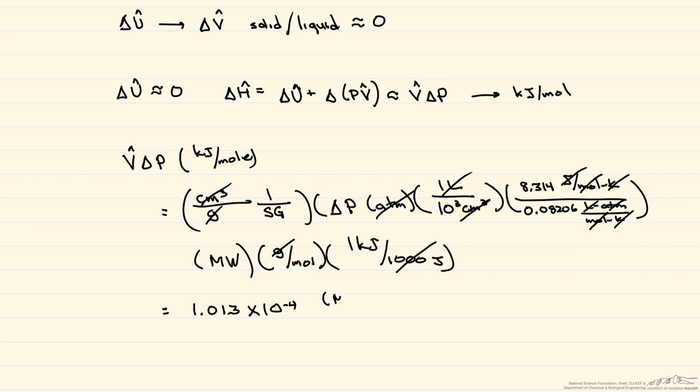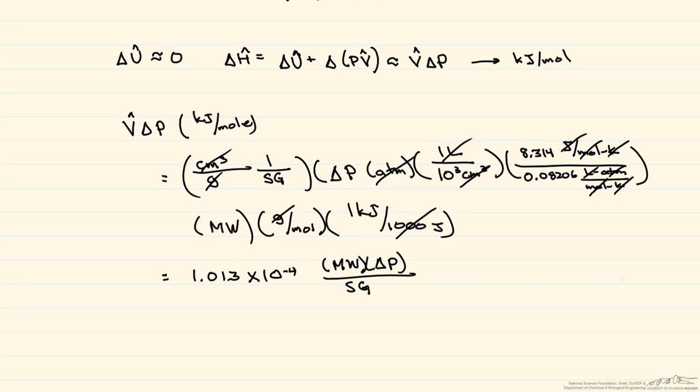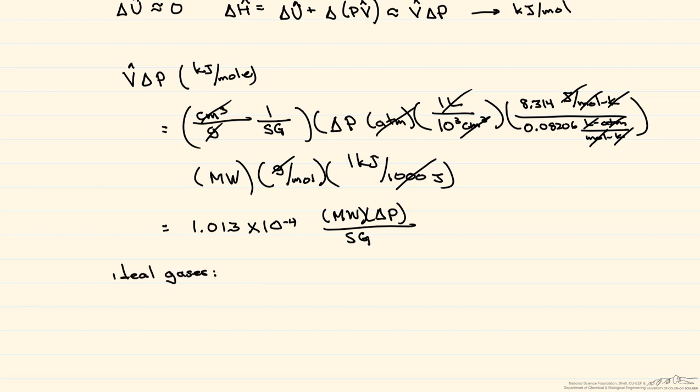So for ideal gases, in order for any energy change due to a change in pressure under isothermal conditions, the temperature has to be very much less than zero degrees Celsius, and/or the pressure has to be very much greater than one atmosphere.